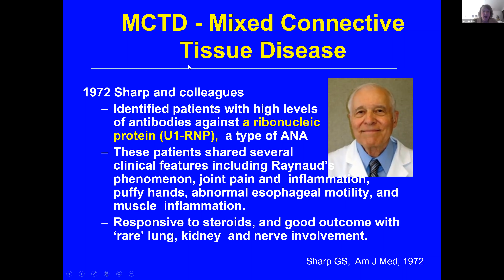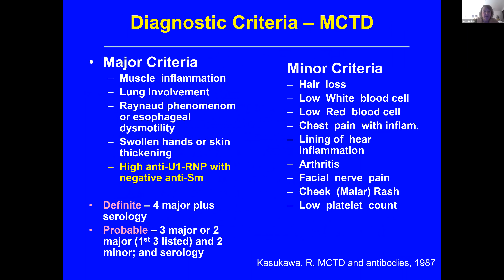He thought this was a unique group of patients with a very specific disease that was very responsive to steroids and had a good outcome without any significant lung, kidney, or nerve involvement that might have occurred in lupus. During those early years, there was lots of confusion about what this is, and so they tried to come up with different criteria. This is the major criteria called mixed connective tissue disease, where you had to have specific criteria for major, plus the U1RNP.